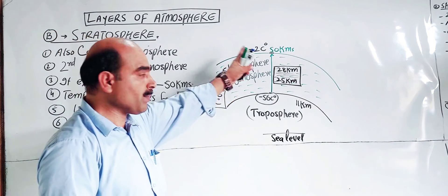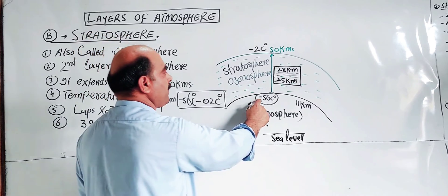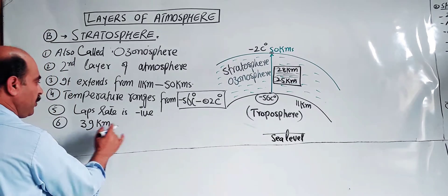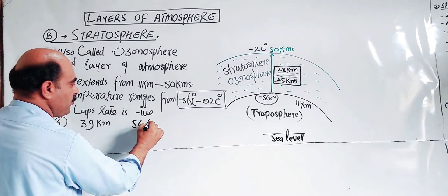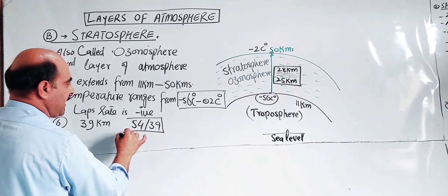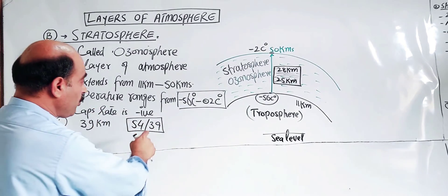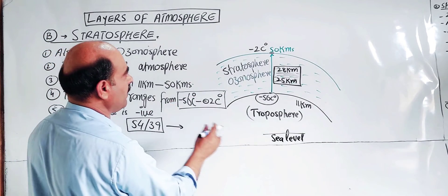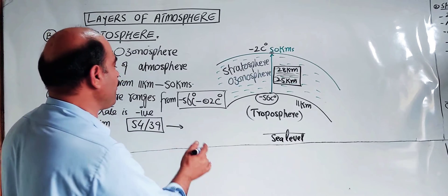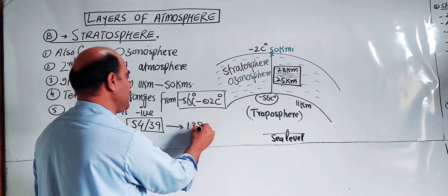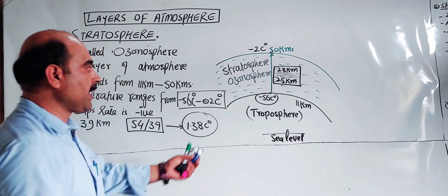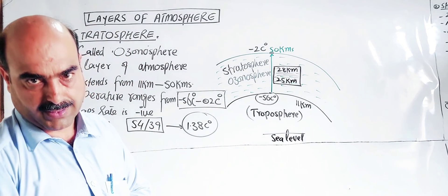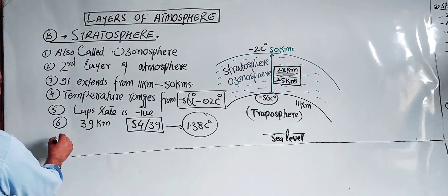The total temperature change is from minus 56 to minus 2, which is 54 degrees C. The total height of this layer is 39 kilometers. Dividing the change in temperature by the height: 54 divided by 39 gives an average of approximately 1.38 degrees C per kilometer temperature increase.